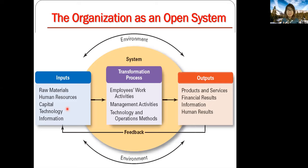Sadly, my body isn't a perfect system like in this diagram — I still eat a lot of junk food. In a perfect system, the output should affect the input and enhance the whole process and organization.